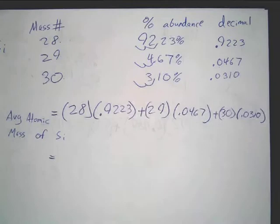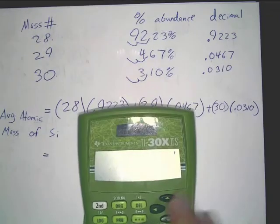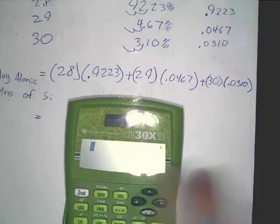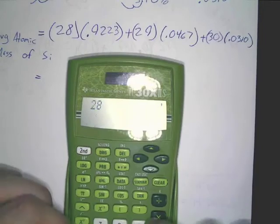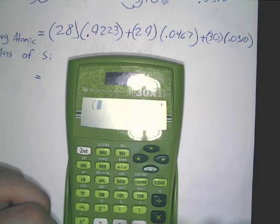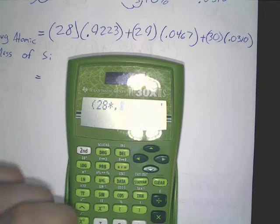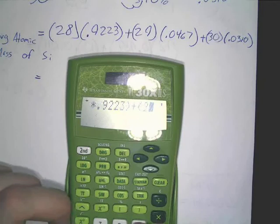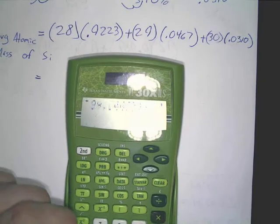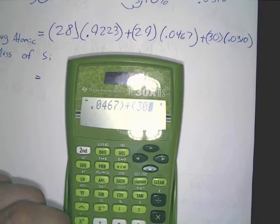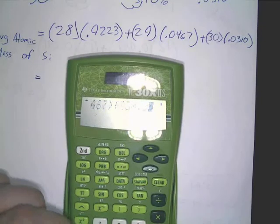The other big thing that you need to remember would be how you type it in your calculator. Do 28 times .9223, plus 29 times .0467, plus 30 times .0310.